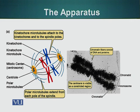These kinetochore proteins have the ability to attach to two things: one is the DNA and second is the kinetochore microtubules. When the process begins, the polar microtubules are responsible for pushing the mitotic spindle apart, and the kinetochore microtubules are responsible for pulling the chromosomes apart.